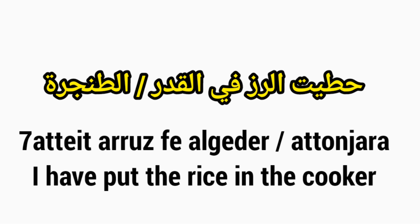Again: Hattait al-Roz fi al-Qidr, or Hattait al-Roz fi al-Tunjara. Hattait — I put in the past. Al-Roz — the rice. Fi means 'in' or 'inside'. Al-Qidr — Qidr means 'the cooker'. It's the big cooker, the one that you put the rice and the chicken in — the big boss in the kitchen. So Qidr is the cooker. The plural of Qidr is Qudur.